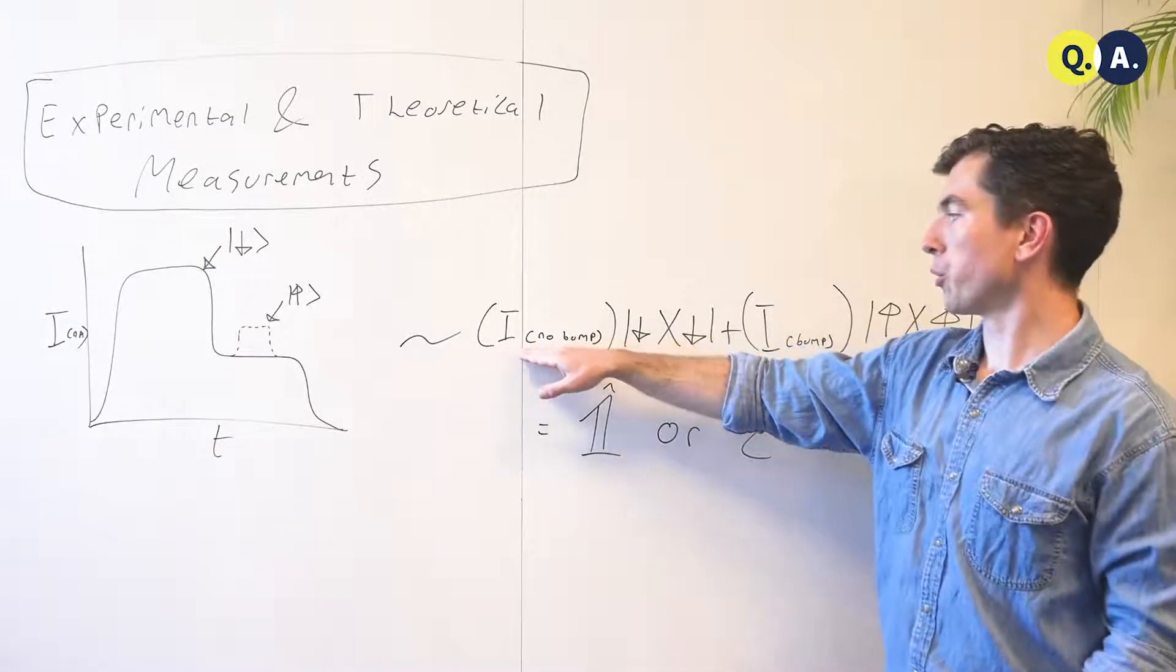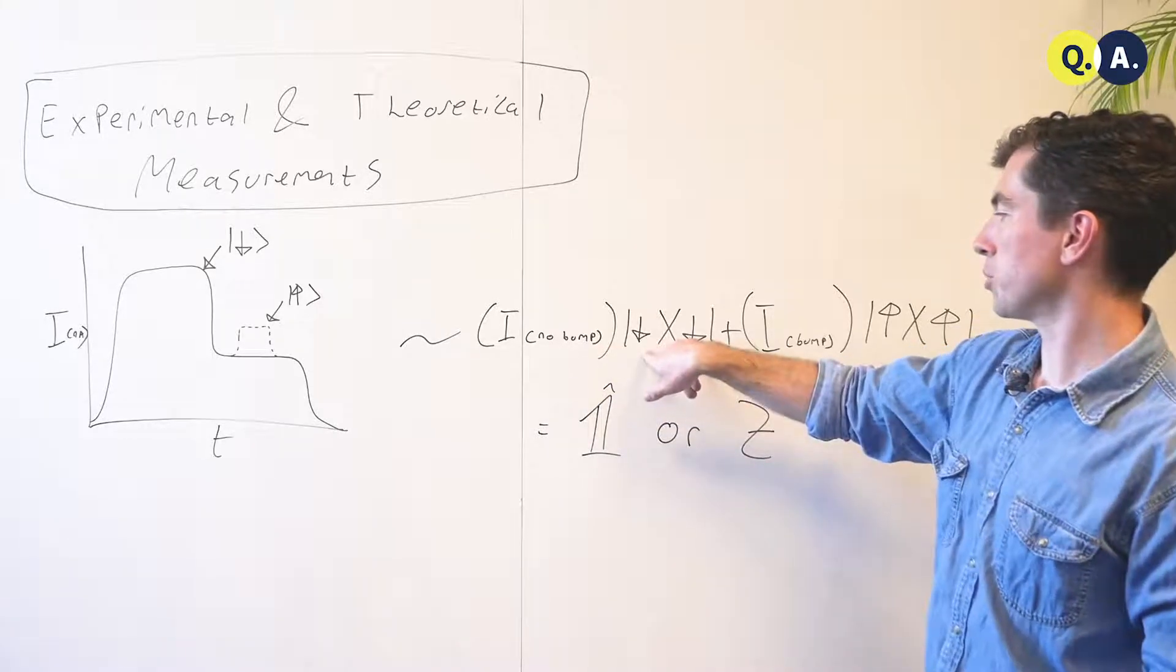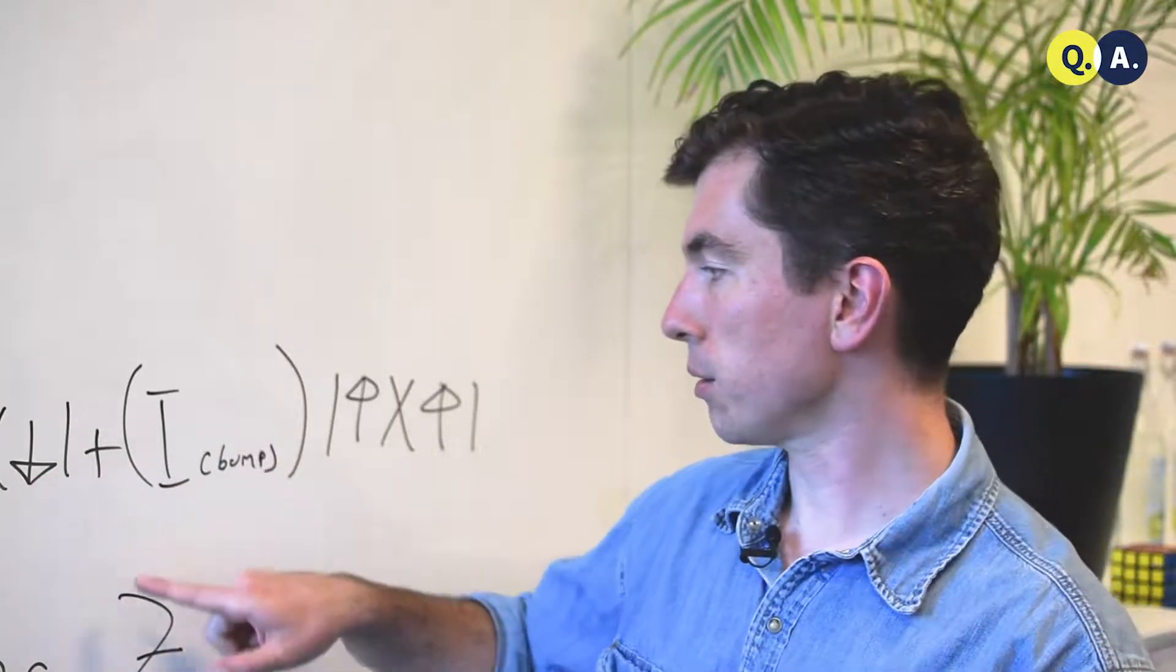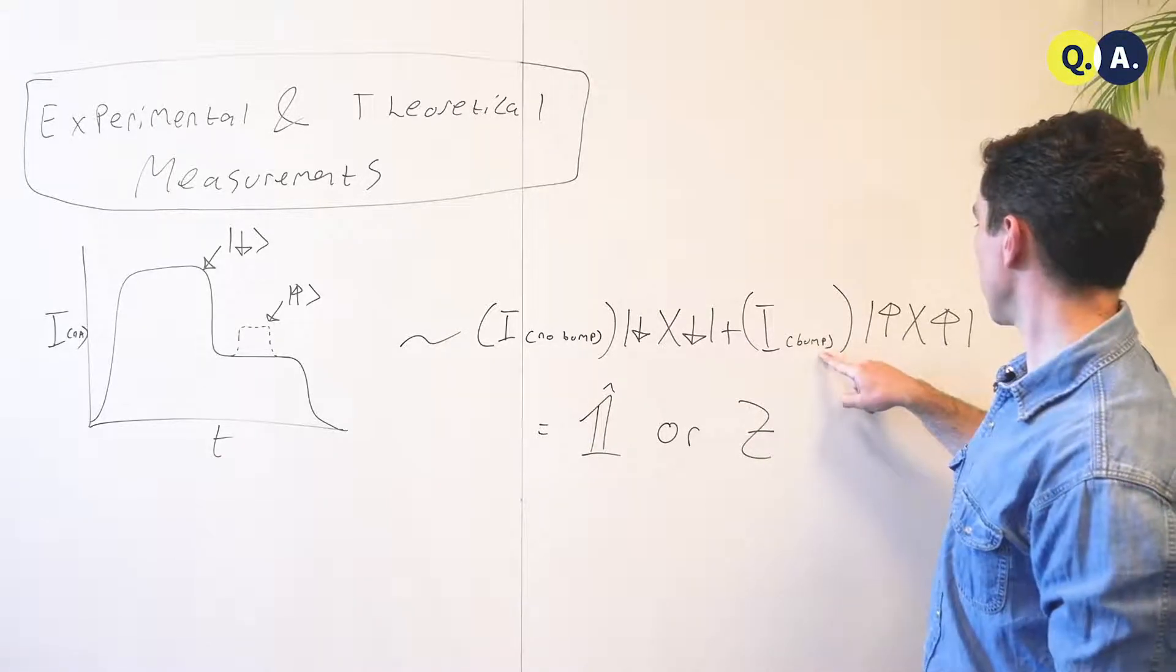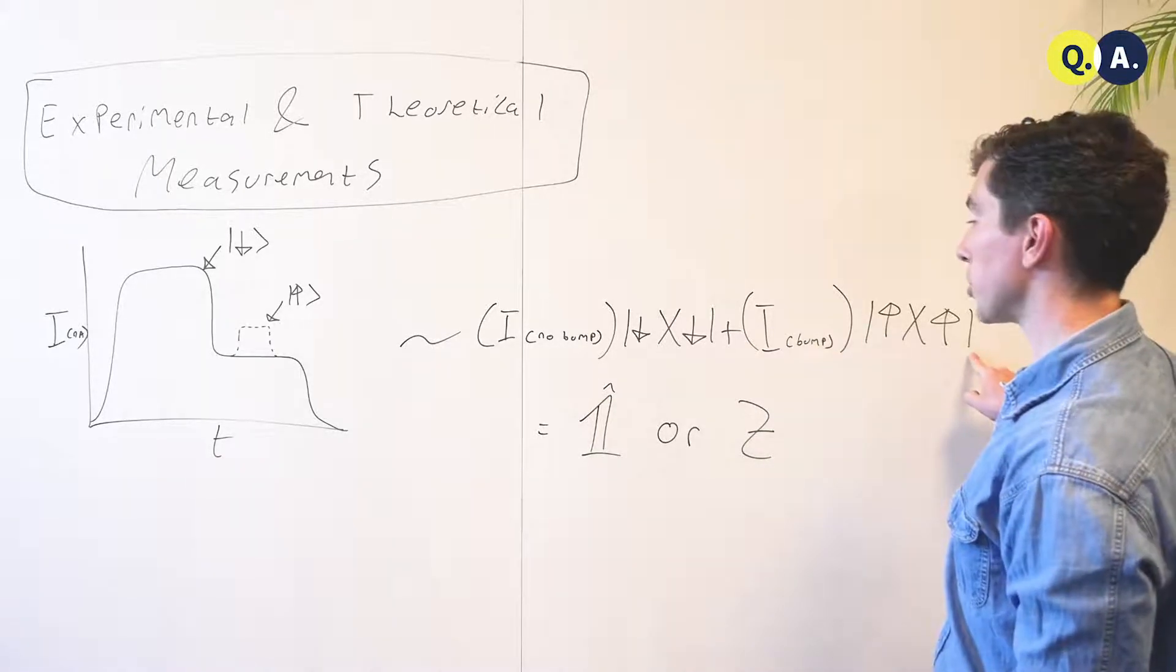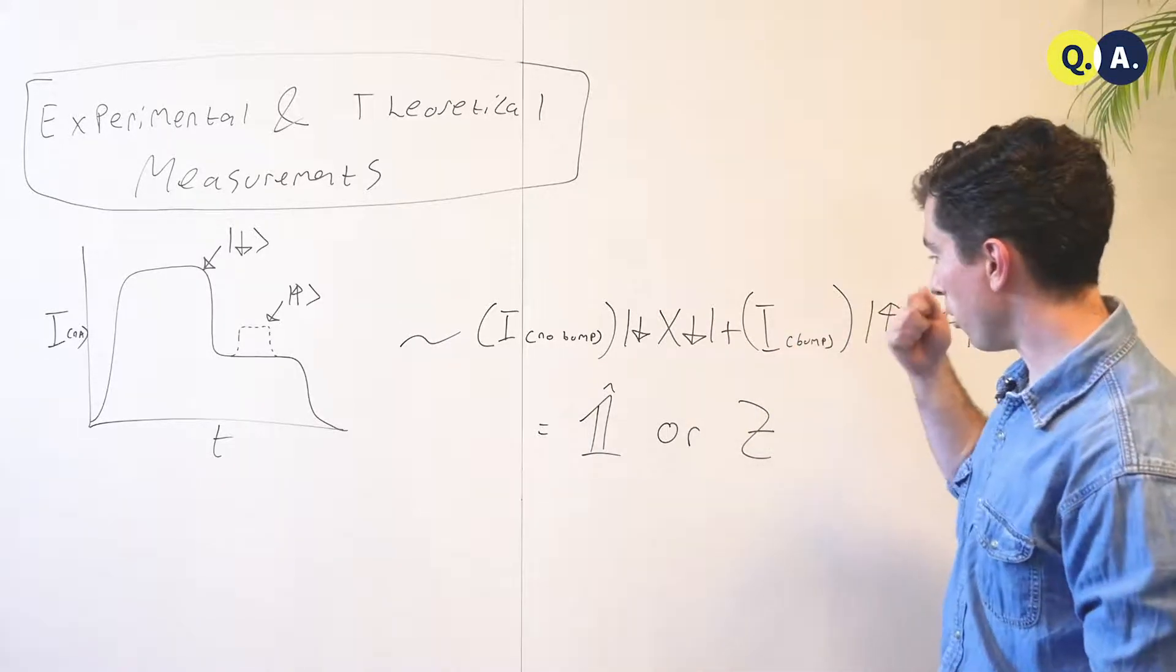So that real number, the amount of current times the projector onto the down state, plus the total amount of current in the case that there is a bump times the projector onto the up state, gives us our measurement operator.